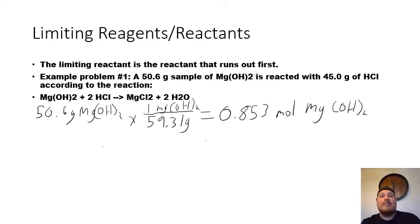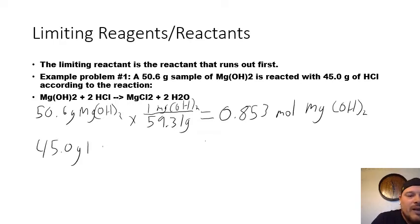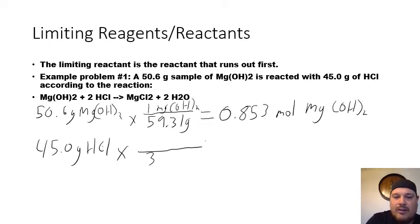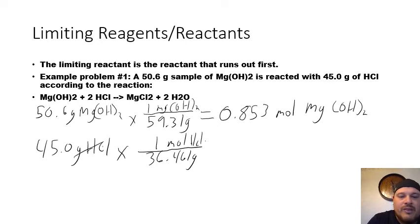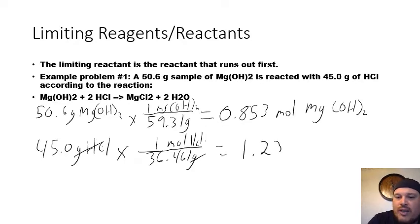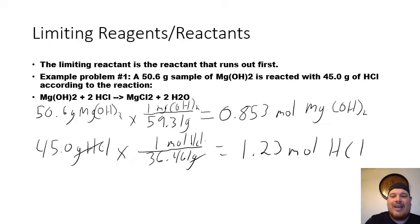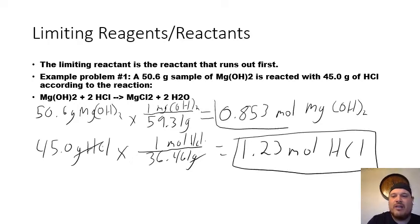Now I'm going to do the same thing for my other reactant, which is hydrochloric acid. I have 45.0 grams of hydrochloric acid and I'm going to convert this to moles as well. The molar mass of hydrochloric acid is 36.461 grams per one mole of hydrochloric acid. Grams cancel out and I'm left with 1.23 moles of hydrochloric acid. Now I know exactly how many moles of each substance are added to the reaction.